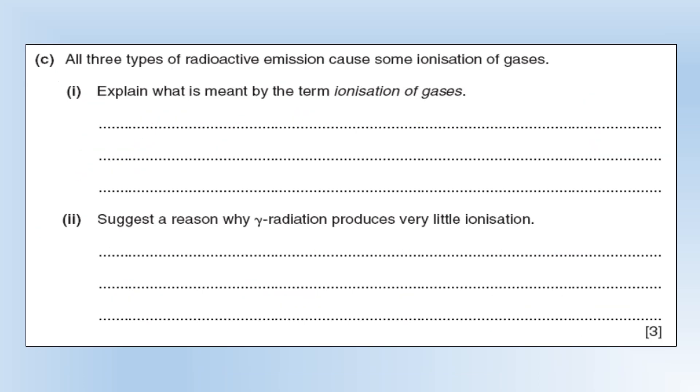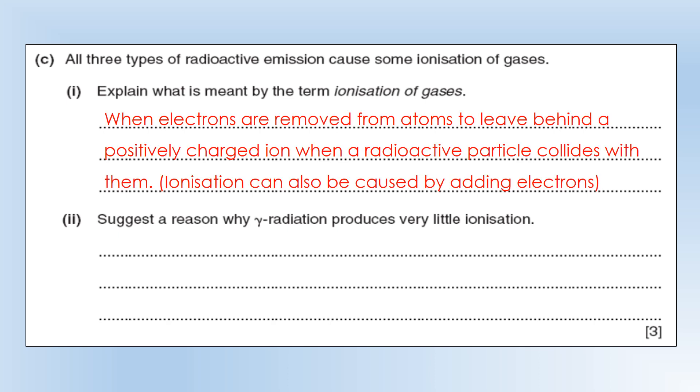All three types of radioactive emission cause some ionization of gases. What do we mean by ionization? With radioactivity, when we say ionization we mean removing electrons from atoms leaving behind a positively charged ion. More generally, ionization can also be the addition of electrons. Suggest a reason why gamma radiation produces very little ionization. It's the few properties of the particle which cause that. It's very high speed which gives it a very short time to interact. It has no mass and charge, both of which mean the interaction forces are very small. All of these factors add together to make ionization very improbable, which is why it can travel so far through a material before it causes an ionization and is lost.